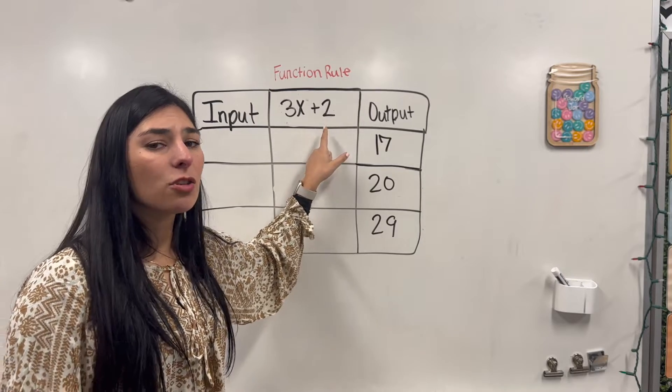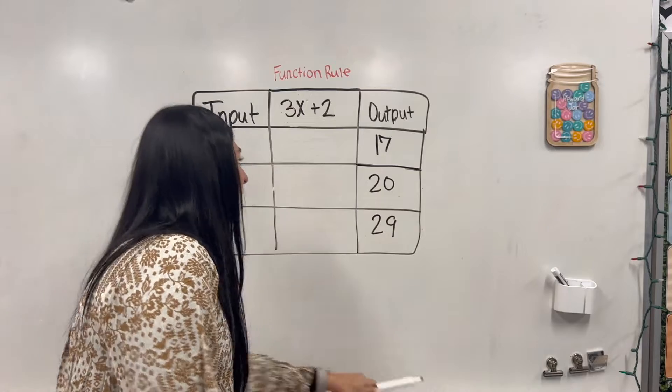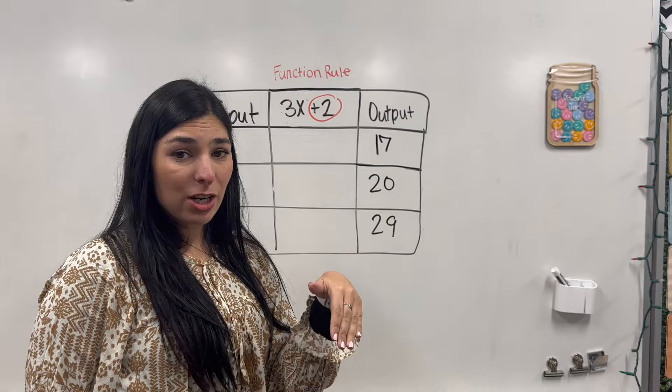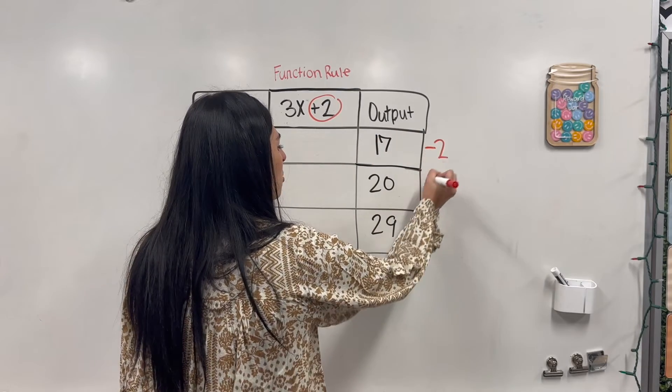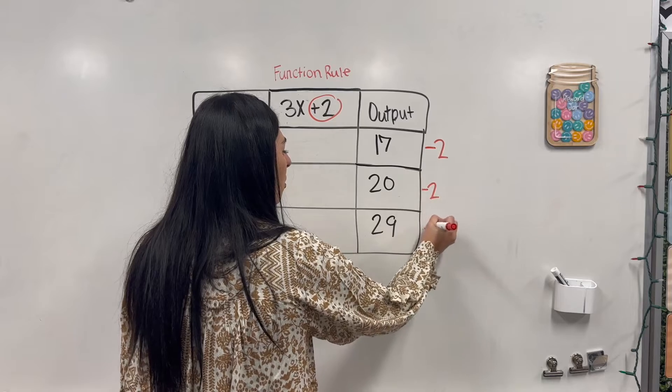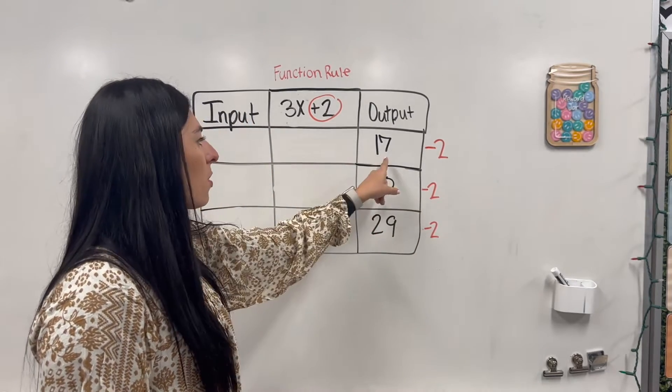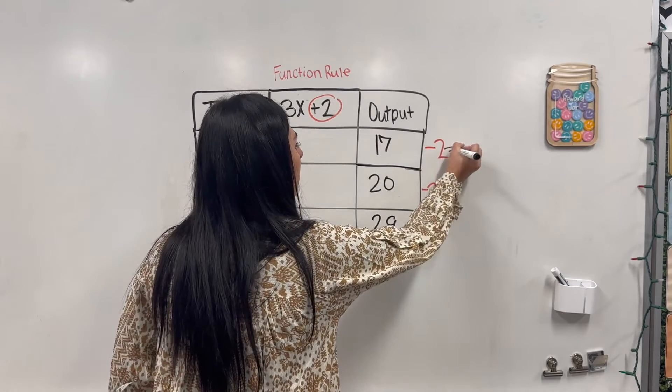So I'm going to do the inverse operation, the opposite, to our output. So let's go ahead. Again, I am focusing on this plus 2. The opposite of addition is subtraction. So that's what I'm doing here. So I have 17 minus 2. We're going to minus 2 for all of them to find our new number we're working with. So 17 take away 2. That's going to equal 15.